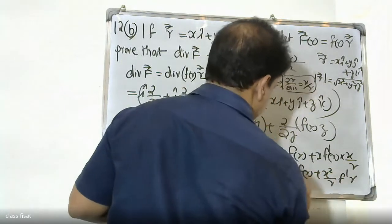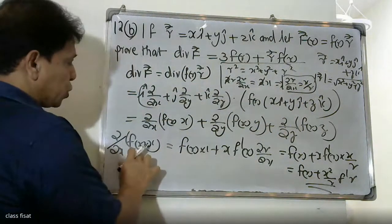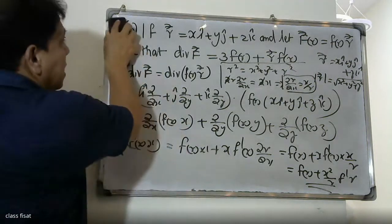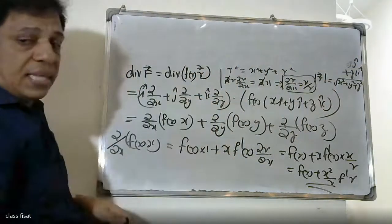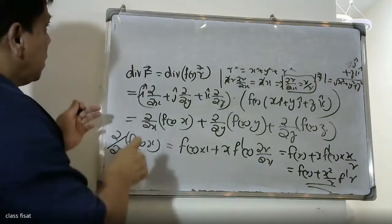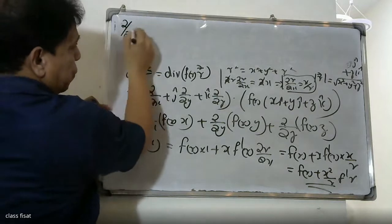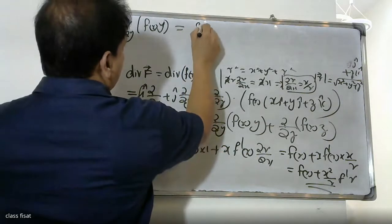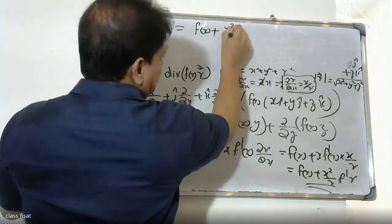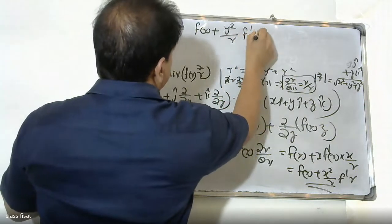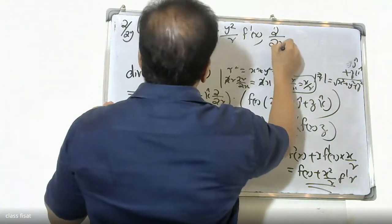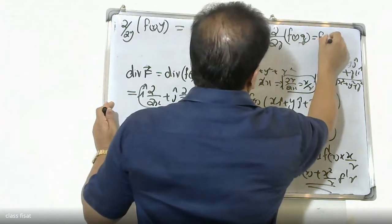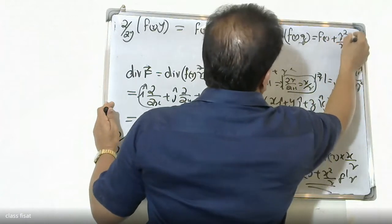The first term gives f(r) plus x squared by r times f dash r. Similarly, dou by dou y of f(r) times y gives f(r) plus y squared by r times f dash r. And dou by dou z of f(r) times z gives f(r) plus z squared by r times f dash r.